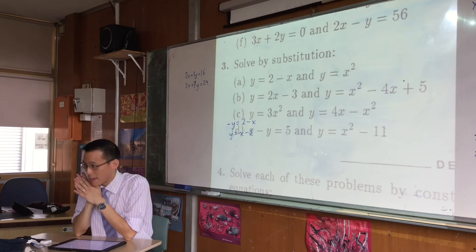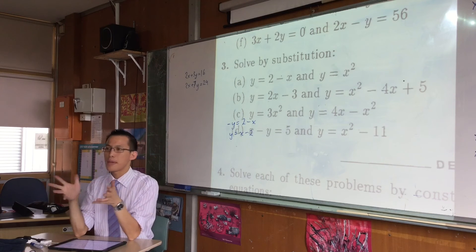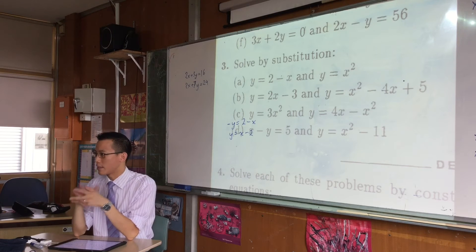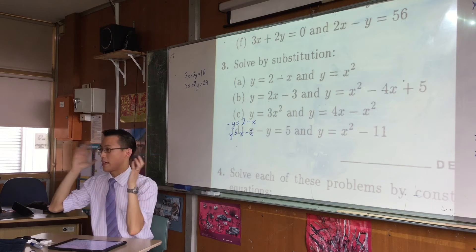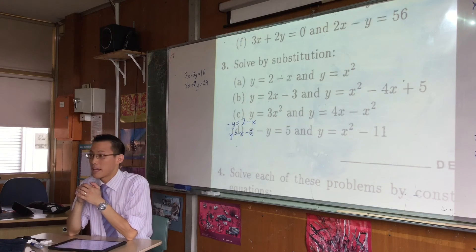And y equals 4x minus x squared. Now I'm not expecting you to have precision, I just want you to think: do you have a picture of y equals 3x squared in your head? Can you imagine it? You see what it's doing? You see what that 3 has an effect on the whole thing?